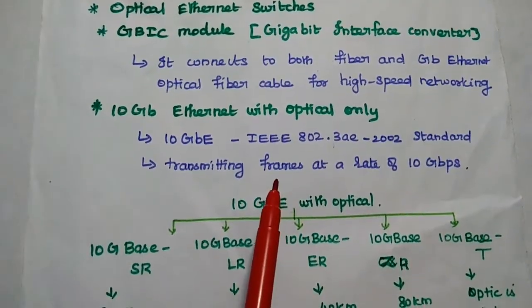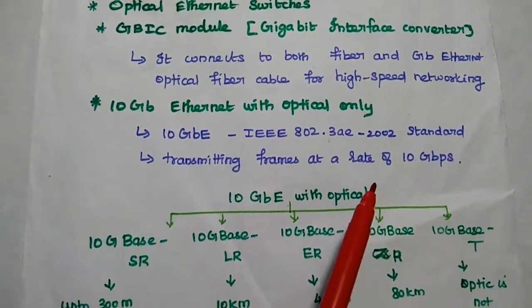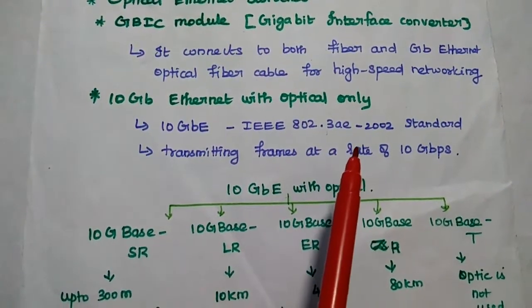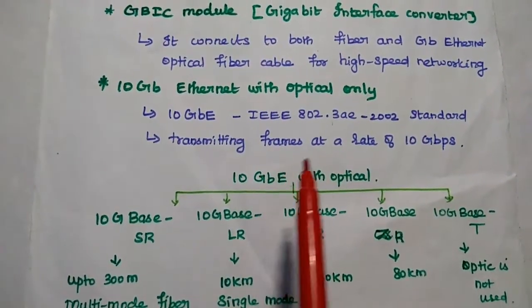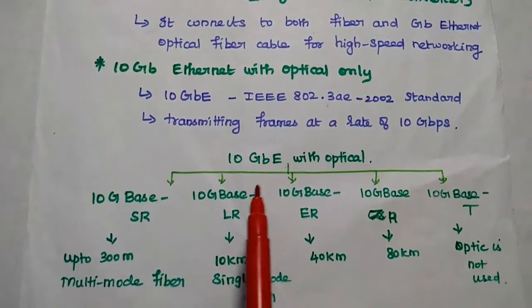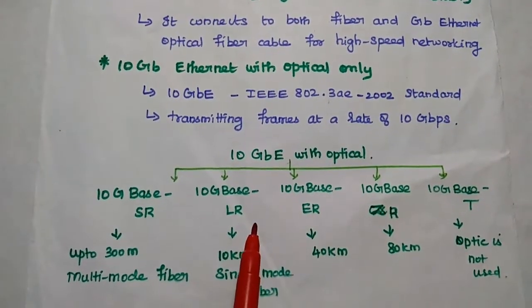Next one is very important, that is 10 GB Ethernet with optical only concept. Its standard is IEEE 802.3 AE 2002 standard. Here transmitting frames at a rate of 10 GB per second. There are different types of 10 GB with optical networks available.